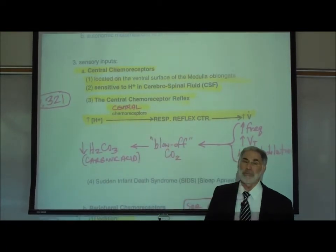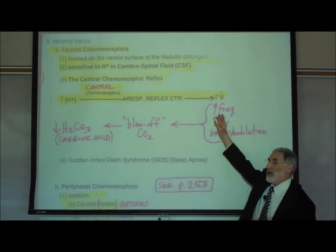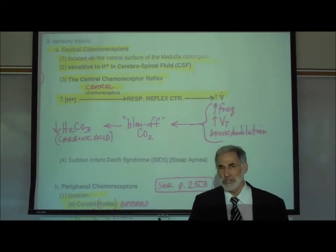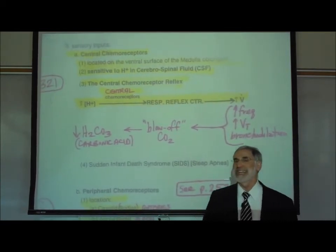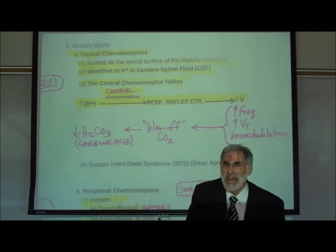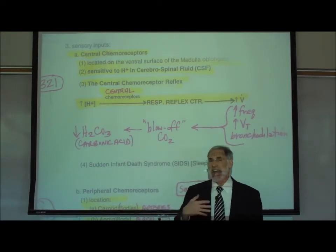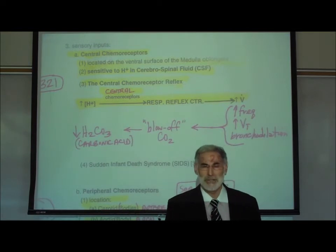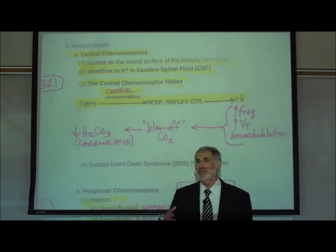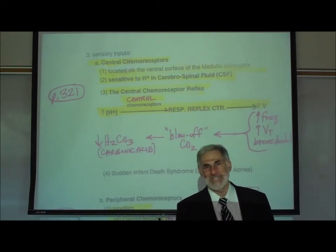When there is a decrease in acidity — a slightly alkalotic state — the central chemoreceptors inform the respiratory reflex center, which causes a decrease in ventilation: a slowing of the breathing rate, decreased tidal volume, and bronchoconstriction. This results in accumulation of carbon dioxide in the bloodstream, as less is exhaled. The retained CO₂ combines with water to form carbonic acid, increasing the amount of acid and compensating for having too little acid.